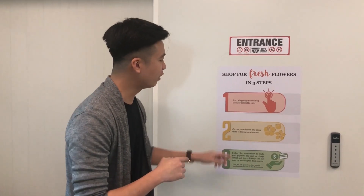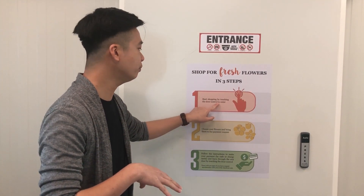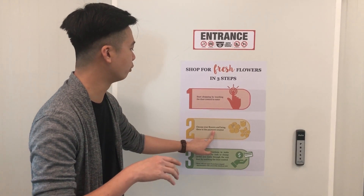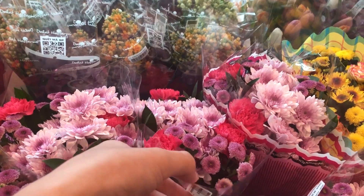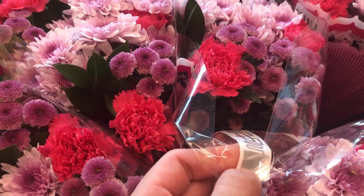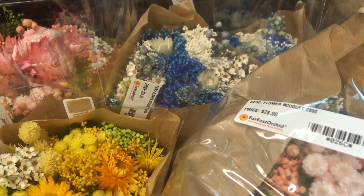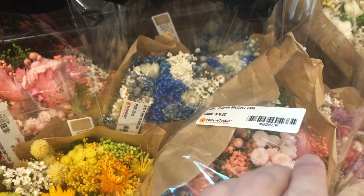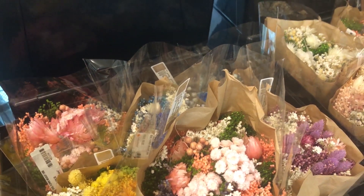So earlier we touched the monitor to enter this environment — this room. The second step is to choose your flower and bring it to the payment counter. The bouquet of flowers in this unmanned store are all packed with RFID tags, along with the price tag. I'll be explaining how this works during the payment process.